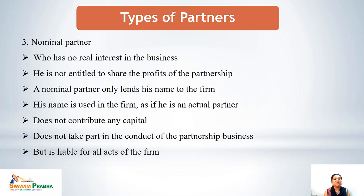The third type is the nominal partner, who has no real interest in the business. He is not entitled to share profits and does not contribute capital. He only lends his name to the firm for use in partnership business — his name is used as if he were an actual partner, but he has no interest, contributes no capital, earns no profits, and takes no part in the actual conduct of business. However, he remains liable for all acts of the firm done by active or dormant partners.